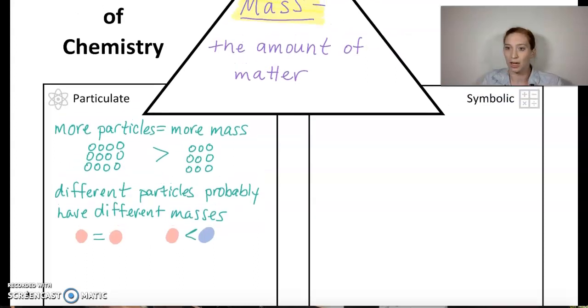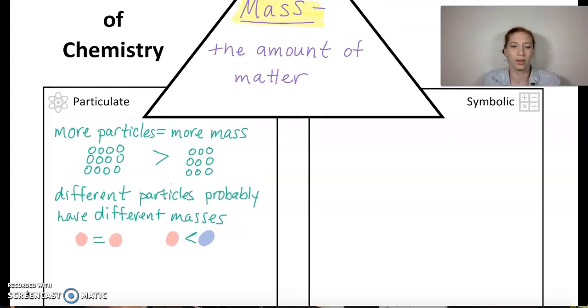As far as our symbolic nature goes, there's really only one thing that I feel like we can add at this point, and that is the unit that we use in order to measure the amount of mass of a substance, and that is going to be grams. That's our base unit. You could also have kilograms, centigrams, micrograms, throw any metric prefix on there. If you are using grams, you are measuring mass in some capacity.